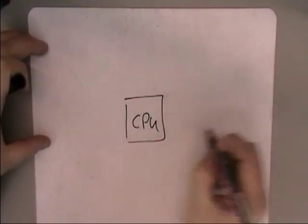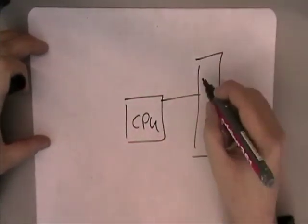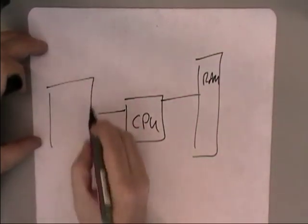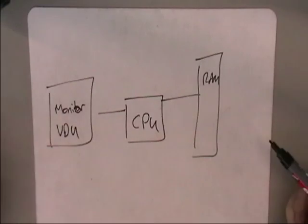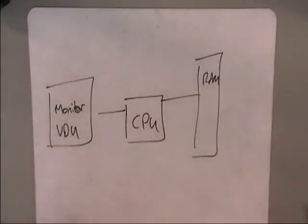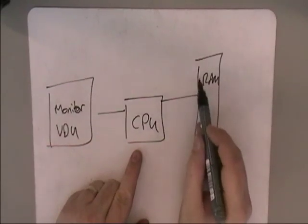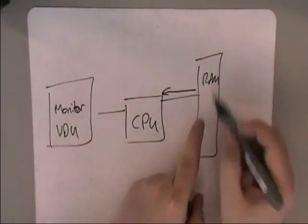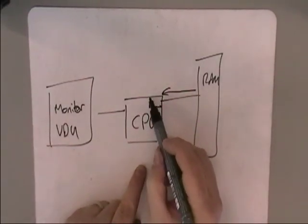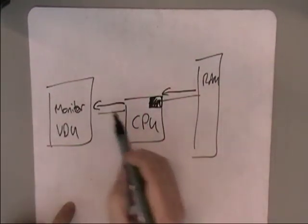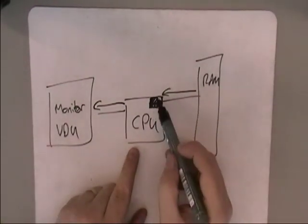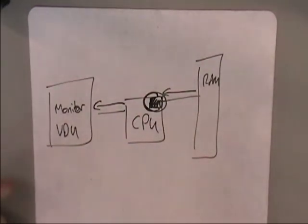Let me draw you a quick diagram. You've got your CPU, your processor, your memory or RAM, and your monitor — your VDU, Visual Display Unit. What you want to do is draw something to the screen. You've created something in a graphics package and want to display it. The processor has to get the instruction from memory. The instructions for the running program get brought into the CPU. We then carry out that instruction — we execute it — and display it onto the screen. Every single action you take has to go through the processor.